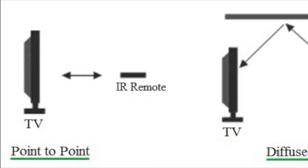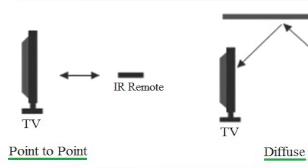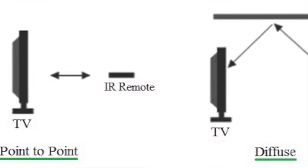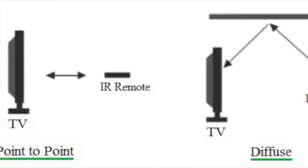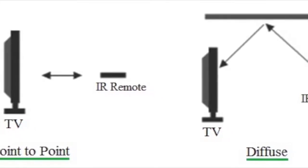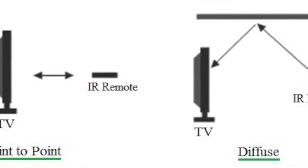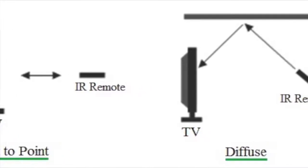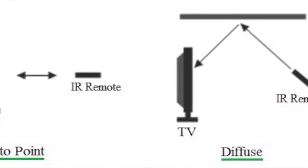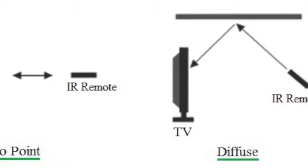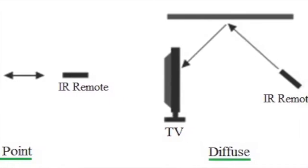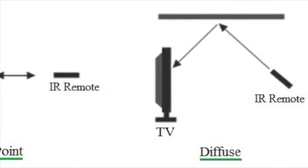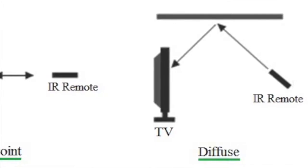Next is the infrared communication. It is also a commonly used wireless communication in our daily lives. It uses the infrared waves of the electromagnetic spectrum. IR communication is used in remote controls of televisions, cars, audio equipment, etc.